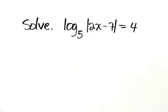Solve log base 5 of the absolute value of 2x minus 7 equals 4. Well, let's translate this from the logarithmic equation to the exponential equation.